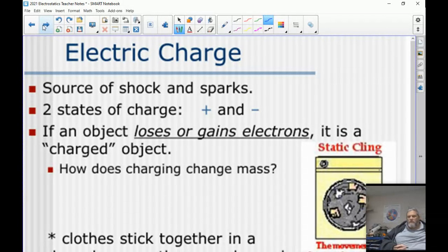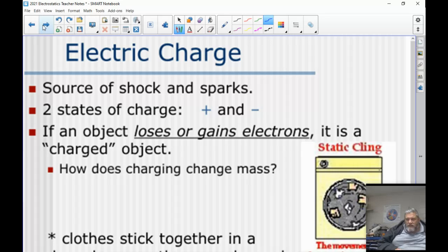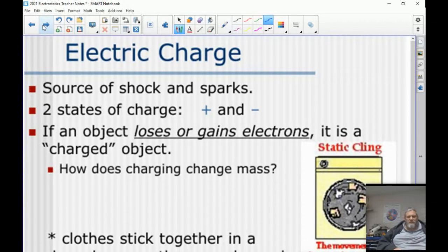Electric charge is the source of shocks and sparks. The two states again are positive and negative. So if something loses or gains electrons, it's said to be charged. Again, if it loses electrons then it's going to be positive. If it's gaining electrons, it's said to be negative. And then how would it change the mass? Well, it changed the mass just a little bit. Electrons are really, really, really tiny.